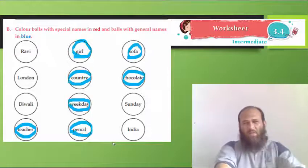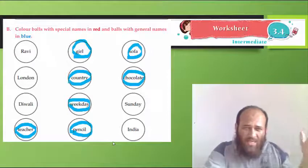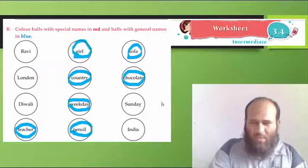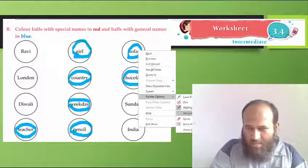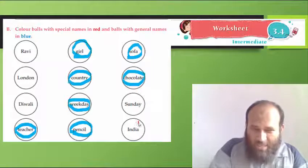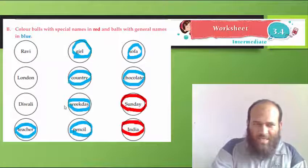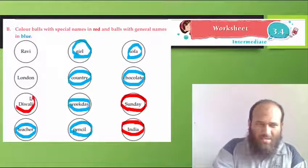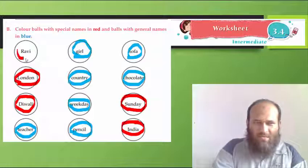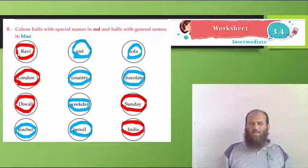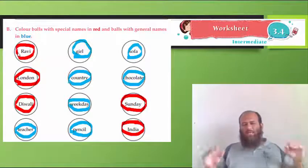Which country do you live? We live in India. India is special name given to our country. So, we will color it red. Now is the time to color our special names. One is India. Then we have Sunday. Diwali is a festival. London is a city. And Ravi is a boy. These are special names and general names.